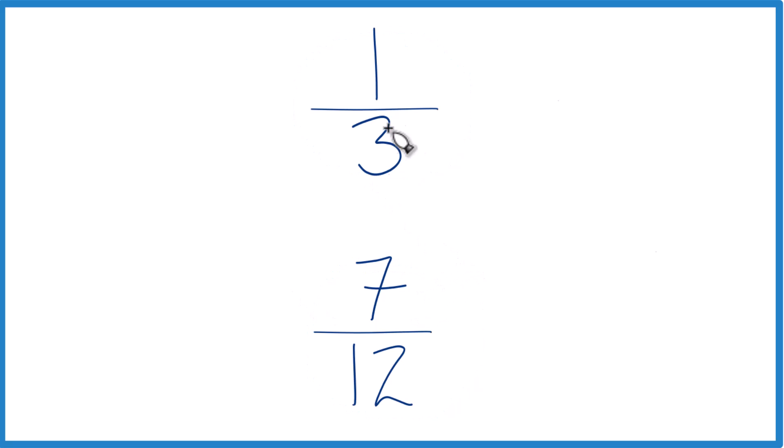So what we need to do, you could just take one divided by three on a calculator and get a decimal, divide seven by twelve, get a decimal, and compare one-third and seven-twelfths.